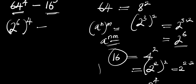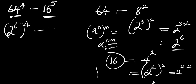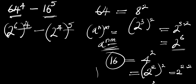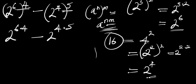We now have 2^6 raised to the power 4, minus 2^4 raised to the power 5. Applying the power rule again, we get 2^(6×4) minus 2^(4×5), which gives us 2 to the power 24 minus 2 to the power 20.